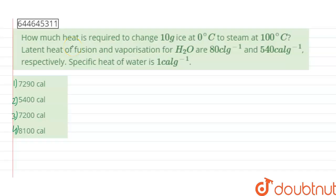Hello guys, the given question asks: how much heat is required to change 10 gram ice at 0 degree Celsius to steam at 100 degree Celsius? Latent heat of fusion and vaporization for H2O are given 80 calorie per gram and 540 calorie per gram respectively. Specific heat of water is 1 calorie per gram.